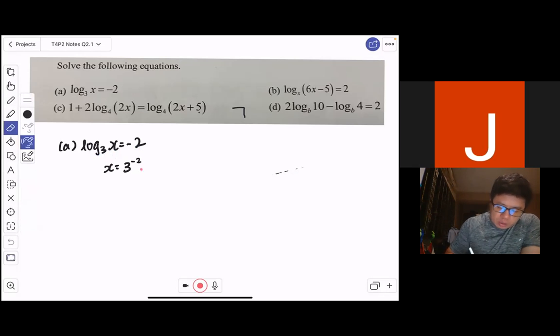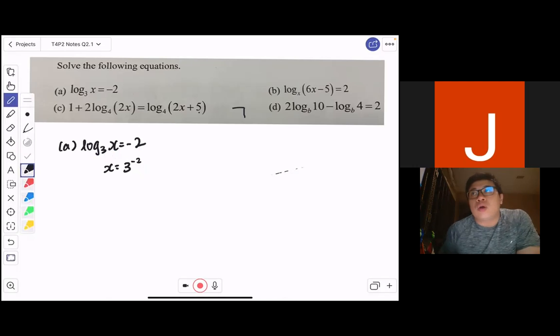And with that now straight away, you are able to obtain your answer. You already have made x a subject. Solving the equation is just basically making x a subject. So with that, your x is just equals to 1/9.